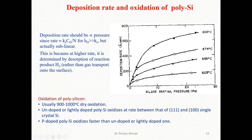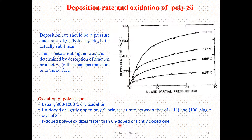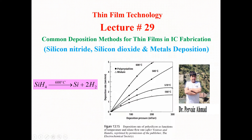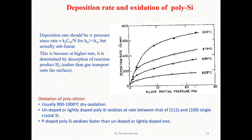Oxidation of polycrystalline silicon normally occurs at temperatures between 900 and 1000 degrees centigrade, and is essentially a dry oxidation. Undoped or lightly doped polysilicon oxidizes at a rate between that of (111) and (100) single-crystal silicon. Heavily doped polycrystalline silicon oxidizes faster than the undoped or lightly doped version. That's all for this lecture — thanks for watching, see you next lecture.